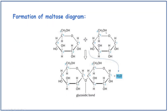This shows the formation of maltose. When two glucoses are added together, you take the H2O away because it's a condensation reaction. A bond forms between the two glucoses which is called a glycosidic bond. So H2O is taken away by a condensation reaction, you get a glycosidic bond formed, and this shows the disaccharide maltose.